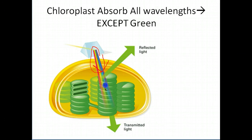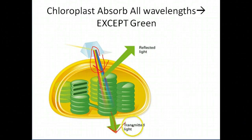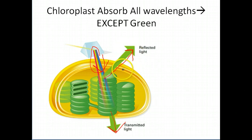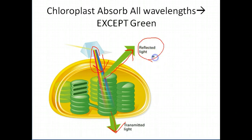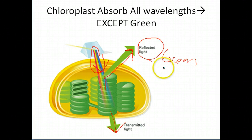Essentially, those thylakoids are going to absorb all the wavelengths except green. Some of that green is going to go straight through the chloroplasts — that's called transmitted light — but a pretty good majority of that green wavelength is going to be reflected. When it's reflected, the reflected light enters our eyes, and our minds interpret that as the green color. So the reason plants are green is due to the reflection of the green wavelength of light.